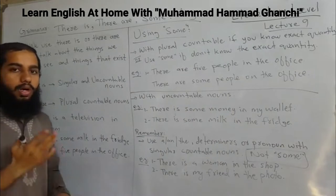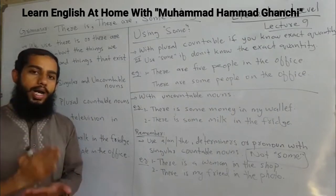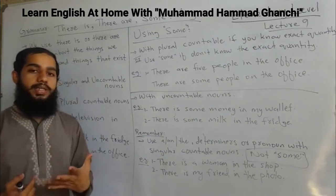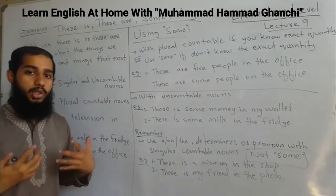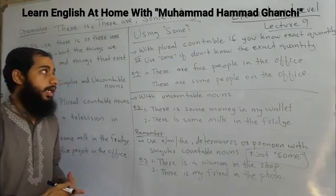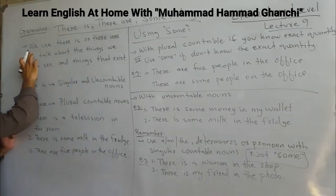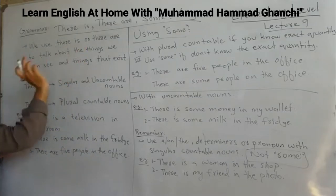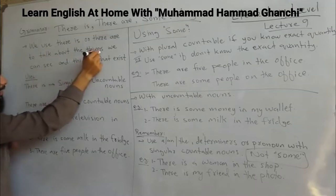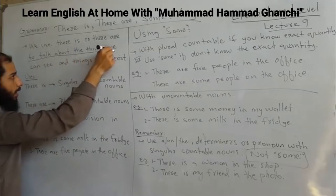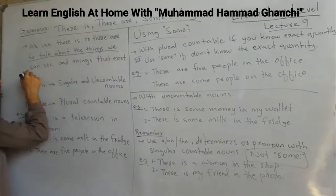First of all, why do we use it? What is the purpose? There are basically two parts. We use 'there is' and 'there are' to talk about things — specifically, to talk about the things we can see.